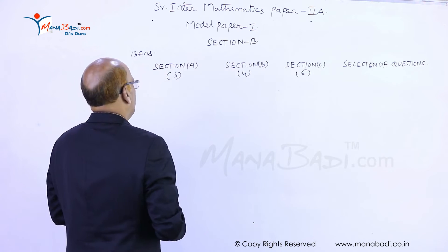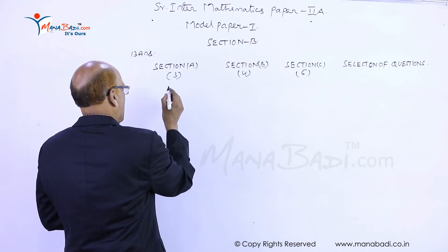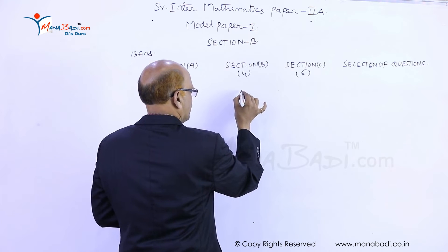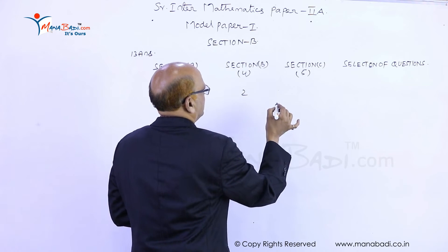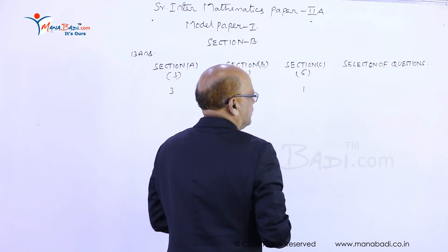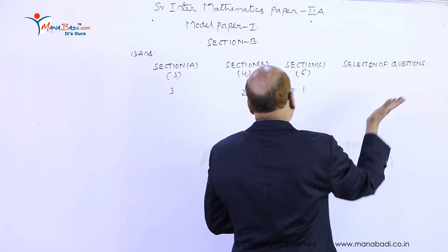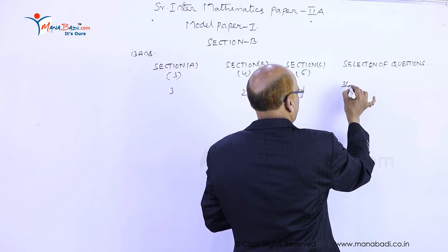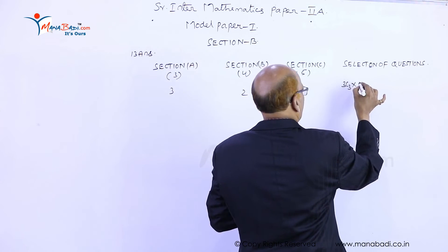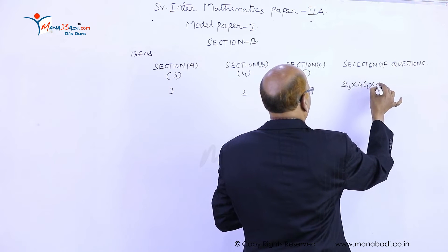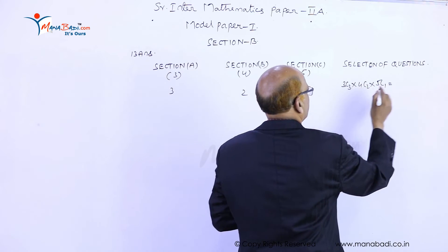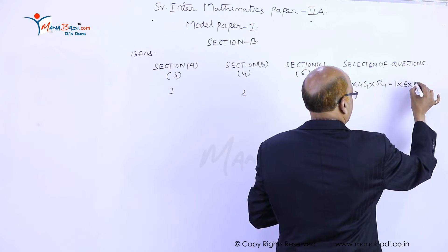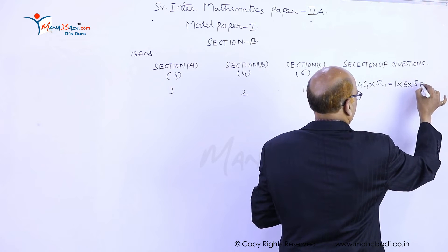Starting with section A, I'll take all three questions, two from section B, and one from section C. The number of selections will be 3C3 into 4C2 into 5C1. So 3C3 is 1, 4C2 is 6, and 5C1 is 5, which equals 30.